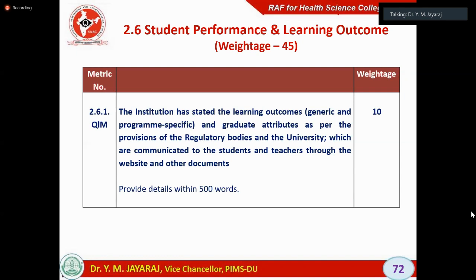Then depending upon the program, what is expected of a doctor — for example, what do you expect from a person having BAMS? These are the expectations, which we call program outcomes. Similarly, in the Ayurveda BAMS program, for a subject like Kaya Chikitsa, what is the expectation of this particular course? You might be in a position to take history, understand Hridosha concept, Nadi concept — these are the competencies the student should develop, and these are called course outcomes.